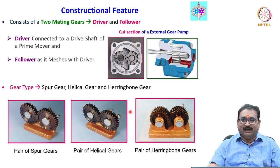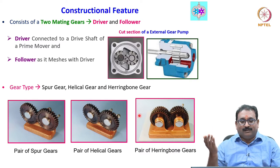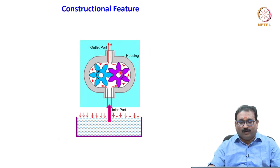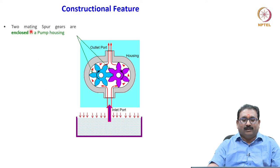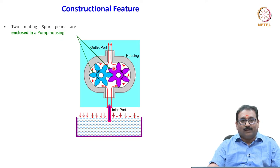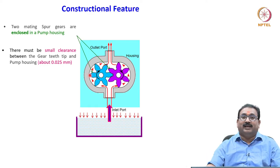We will see more in the next slide. The inlet port is connected to the tank and outlet is connected to the valves and actuator. The two mating spur gears are enclosed in the pump housing. There must be a small clearance between the gear teeth tip and the pump housing so that they can rotate. That clearance is very, very small — it is 0.025 mm.